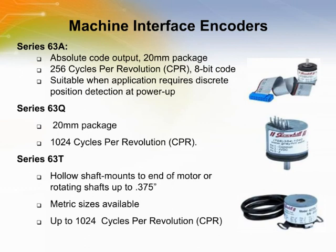The 63Q is a 1024 CPR incremental encoder. The 63T is a hollow shaft version of the 63Q, suitable for mounting on a motor or other shafts in a motion control system. These products are used in applications such as motor shafts, conveyor belts, machine tools, robots, factory automation, office printer and copier mechanisms, antennas and telescopes, elevators, printing equipment, and smart card fabricating equipment.